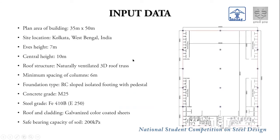The input data for the current design of the quarantine center includes a plan area of 35m by 50m, site location of Kolkata, eaves height of 7m, and central column height of 10m. The building is naturally ventilated. Minimum column spacing is 10m in the Z direction and 17.5m in the X direction. The foundation is a trapezoidal isolated footing with pedestal using M25 concrete and FE415 reinforcing steel. Structural steel grade is FE410 (E250 mild steel), roofing uses 2mm galvanized color-coated sheets, and safe bearing capacity of soil is 200 kPa.